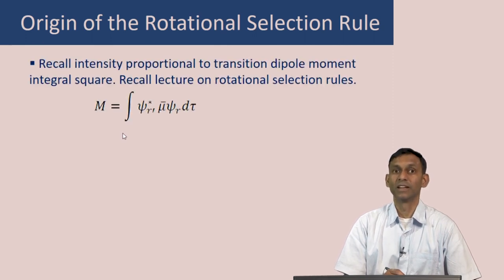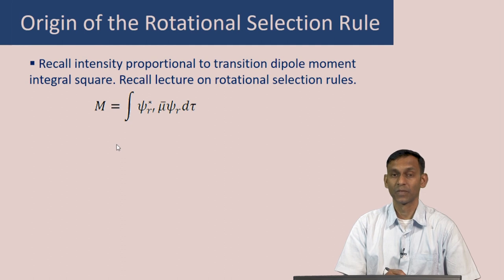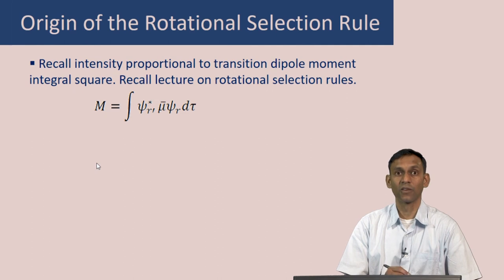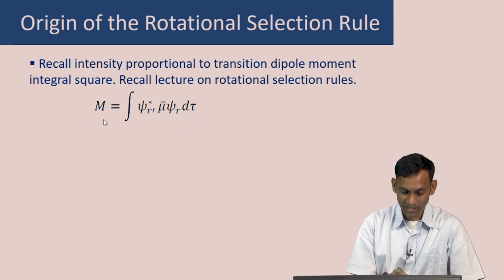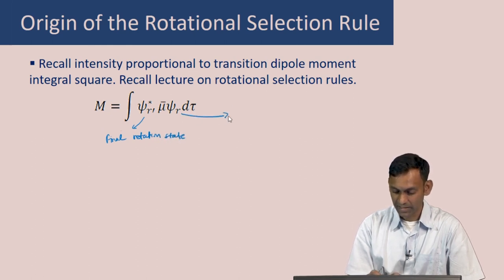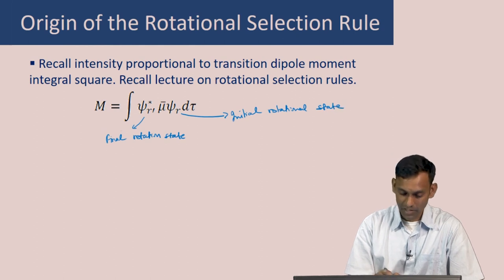You will recall that the intensity of a transition is proportional to the square of the transition dipole moment integral. You will also recall that in an earlier lecture on rotational spectroscopy, the intensity of a rotational transition depends on the rotational transition dipole moment integral, where this is the final rotational state and psi_r is the initial rotational state, and mu is the dipole moment of the molecule.